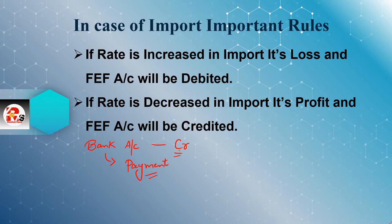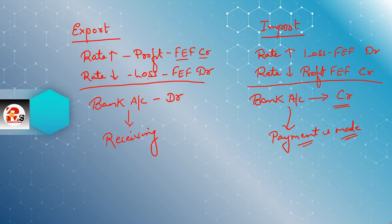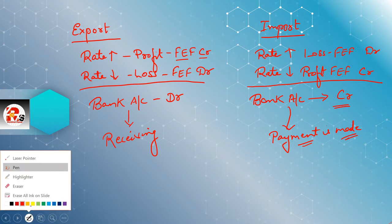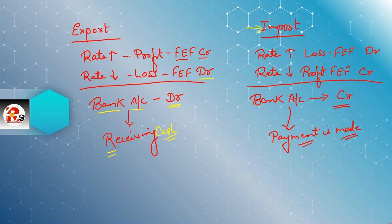Similarly, in export type, I told you that the bank account would be debited. Just like that, in import, it is always credited. Some rules we already discussed last time — a little revision: in the export variety, when rate increases, profit occurs. Based on this chapter, when there's profit, the FEF account is always credited. If rate decreases, there is loss, and the FEF account is always debited. Bank account is always debited in export — because we are receiving cash, so the bank account will be debited. Today we will solve the import practical question. Import is the opposite of export.